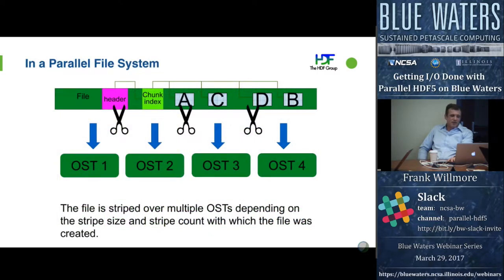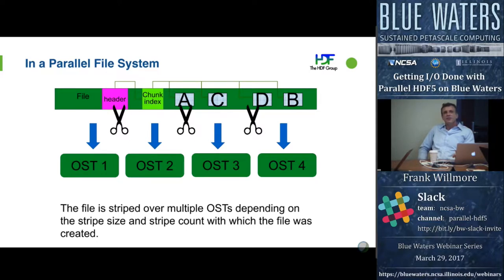All this data gets sliced up many ways and written to storage targets. The number one takeaway is that chunk size is important, because it's the one thing you have control over for being contiguous. Reading contiguously is faster than reading randomly at different places in memory or a file — that's almost always true. There's always an exception, but it's certainly almost always true.